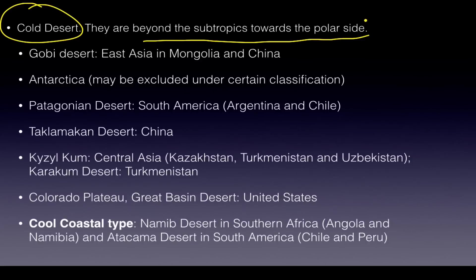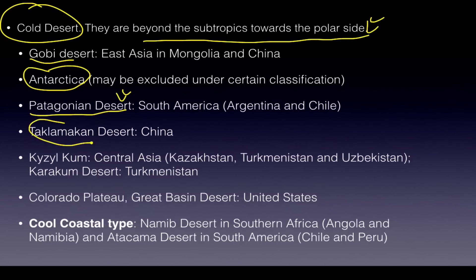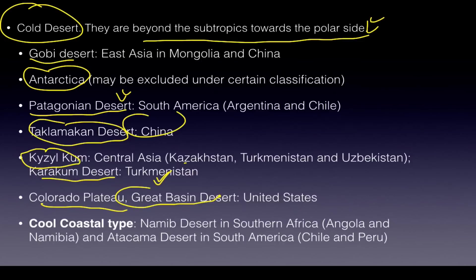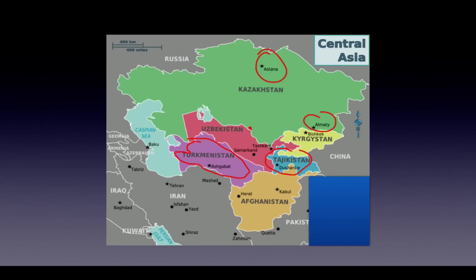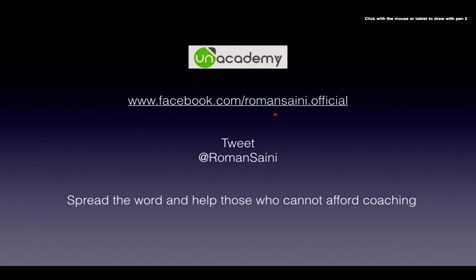Cold deserts are beyond the subtropics towards the polar side. Examples include the Gobi, Antarctica (debatable), Patagonia in Argentina, Taklamakan in China, Kyzylkum in Central Asia, and Karakum in Turkmenistan. The Colorado Plateau and Great Western Desert are cold deserts. Cool coastal deserts on the coastside — like Namib in southern Africa and Atacama in South America — are subtypes. Key Central Asian cities: Kazakhstan has Astana and Almaty; Turkmenistan has its exclusive desert; Uzbekistan has Samarkand and Tashkent; Bishkek is in Kyrgyzstan.